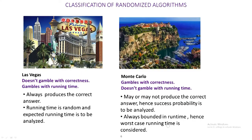In the analysis: if the algorithm always produces a correct answer, you analyze the expected running time. If the algorithm may produce wrong answers, you analyze the success probability — that is, the probability with which the algorithm produces the correct answer. Based on this, randomized algorithms are classified into two groups: Las Vegas algorithms and Monte Carlo algorithms.